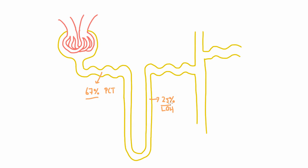If you add these two up together you'll see they're equal to 92%, so that leaves 8% which is reabsorbed from both the DCT, the distal convoluted tubule, and the collecting duct.